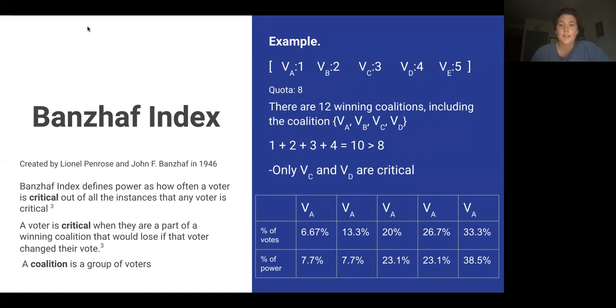But if either voter C or voter D left the coalition, then the coalition would no longer pass. So voter C and D are both critical. We go through all coalitions tallying up any time any of the voters is critical, and that's how we make the index for the voters.